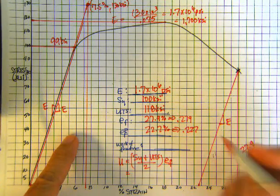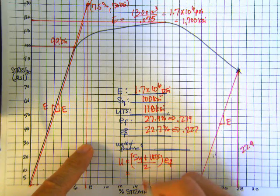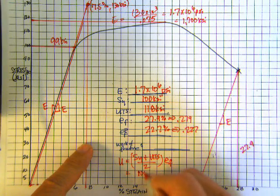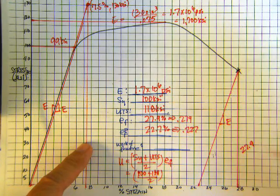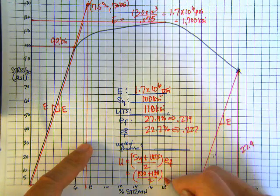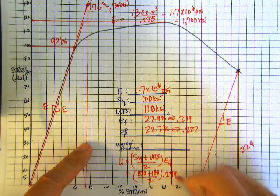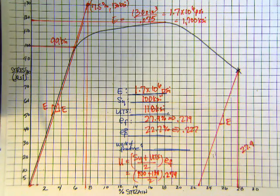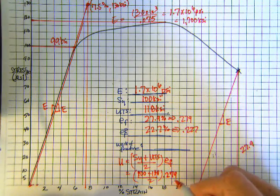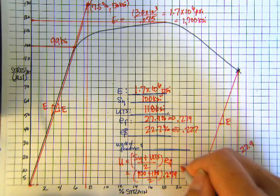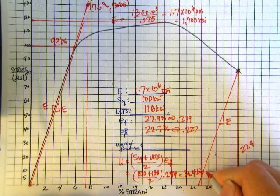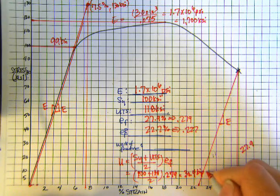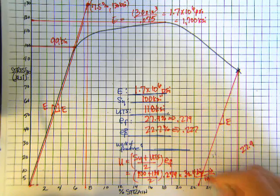Okay. So when we do that, my ultimate was 118, my yield was 100, and my strain to failure was 27.9, but let's make that 0.279. It needs to be in terms of strain, and that gives us then a value of 30.4 kip something. And we need to talk about what this is.